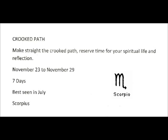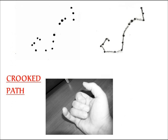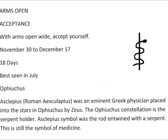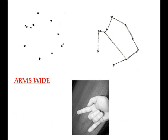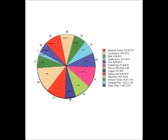Crooked path. Make straight the crooked path. Reserve time for your spiritual life and reflection. November 23rd to November 29th. Duration is 7 days. Best seen in July. Formerly known as Scorpius. Arms wide. Acceptance. With arms open wide, accept yourself. November 30th to December 17th. Duration is 18 days. Best seen in July. Formerly known as Ophiuchus.